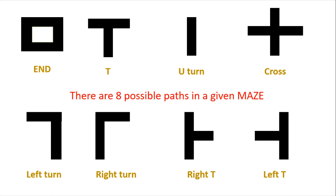To summarize, we need to identify all possible junctions in any given line-based maze. As you can see on the screen, there are eight possibilities. Out of these, one specific structure — a white part inside a black surface — is the unique end symbol we will use for this course. You may find a variety of end symbols elsewhere, but for our course we will use white within black to identify the end.